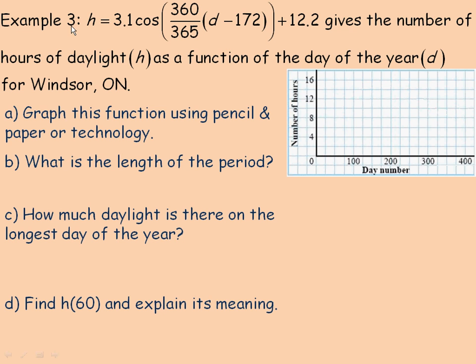Last example on page 3, we have this function we're going to graph. H equals 3.1 times the cos of 360 over 365 times d minus 172 plus 12.2. It gives the number of hours of daylight, so H is the number of hours of daylight as a function of the day of the year. So d is the day of the year for Windsor, Ontario.